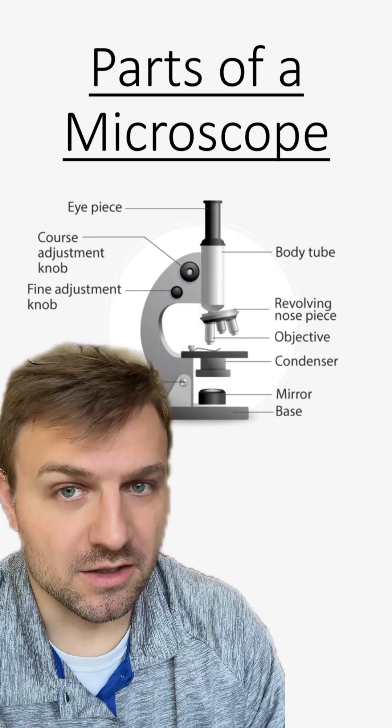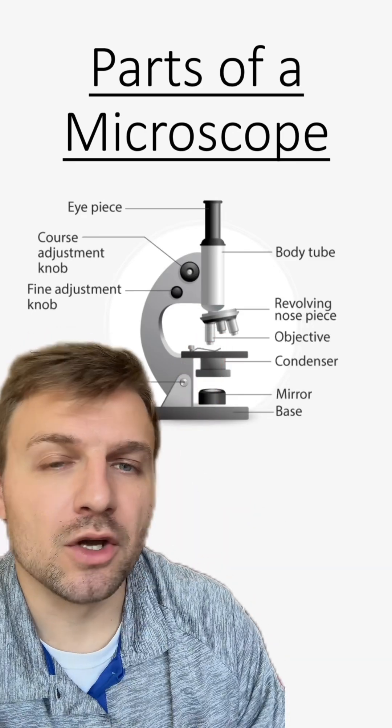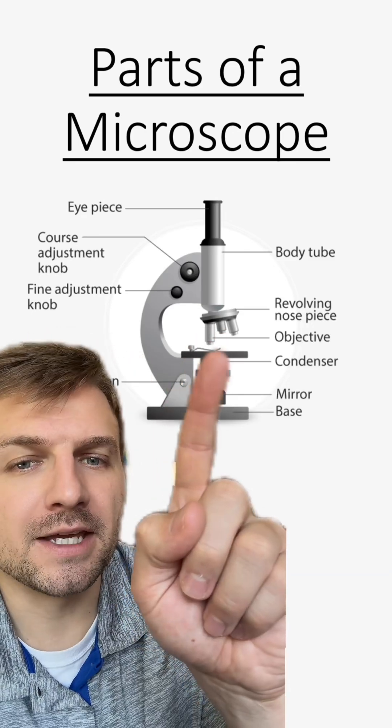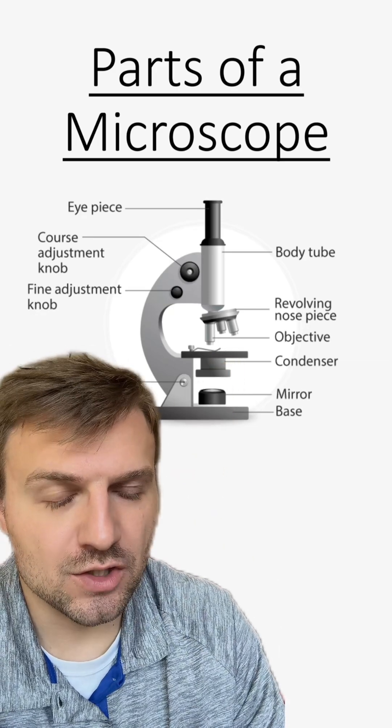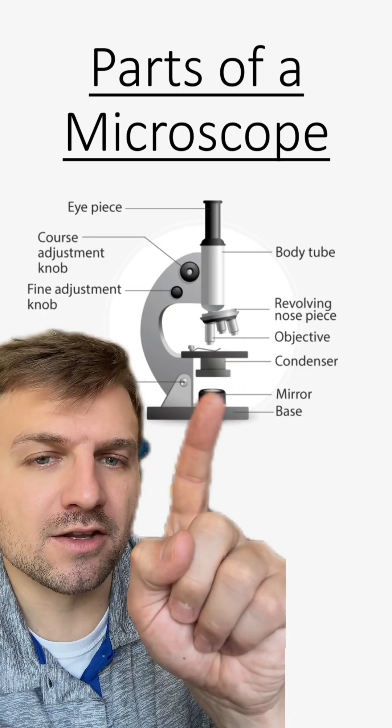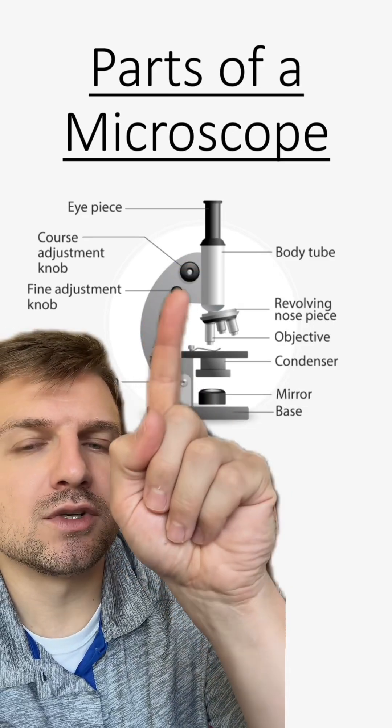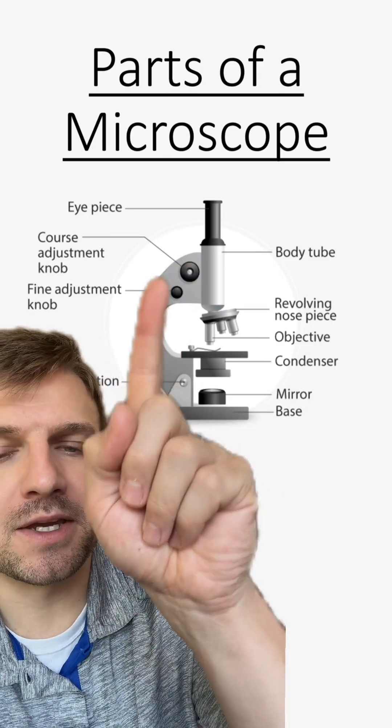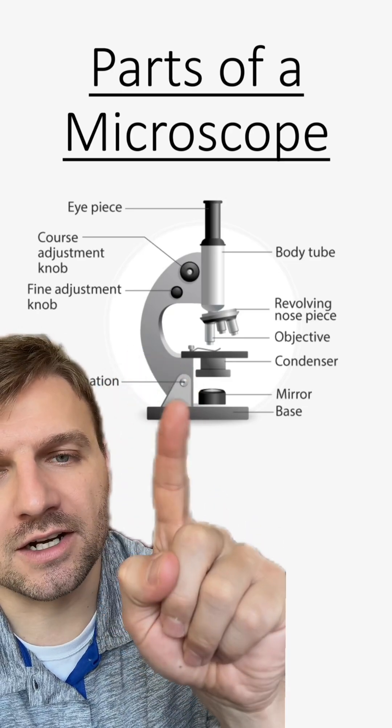First, you have your eyepiece or your ocular lens. You also have lenses down here called your objective lenses. Where you place the microscope slide is called the stage. You also have a light source down here at the bottom. And typically you have two different adjustment knobs. Sometimes they're up here, sometimes more often they're down here.